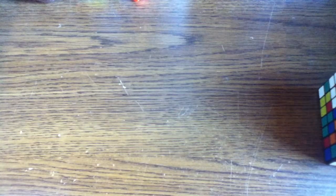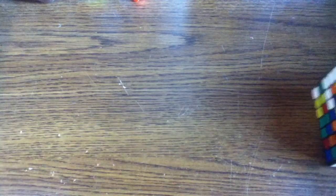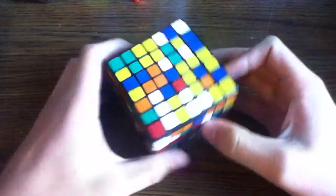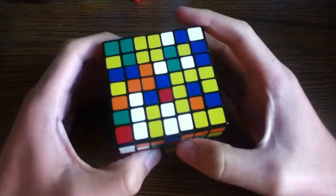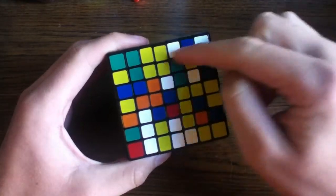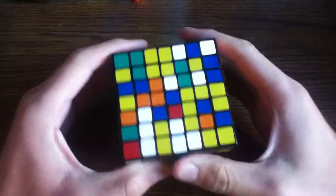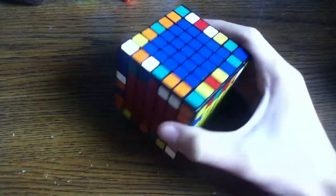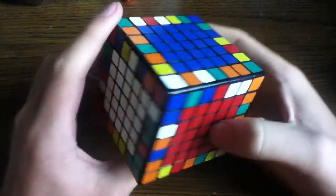All big Rubik's cubes can be solved the same way, even this gigantic, intimidating-looking 7 by 7. And the first step is to solve these middle pieces in the middle of the cube, using your own imagination. Once you've solved all the middle pieces with your God-given ingenuity, then you can begin solving all these edge pieces.